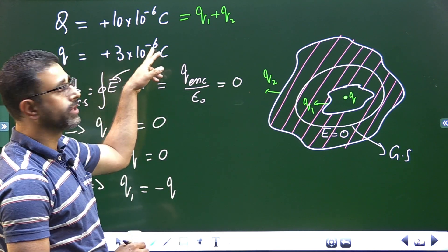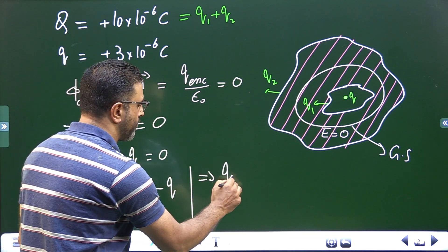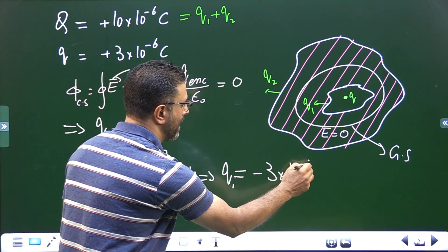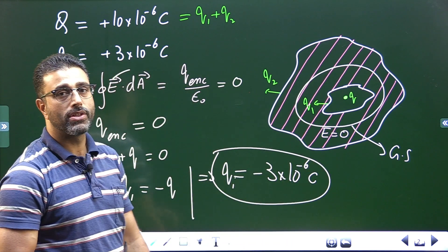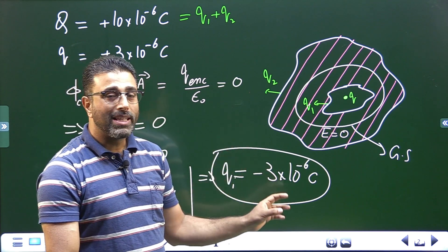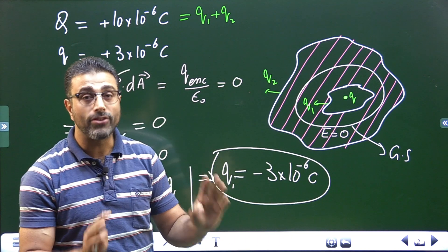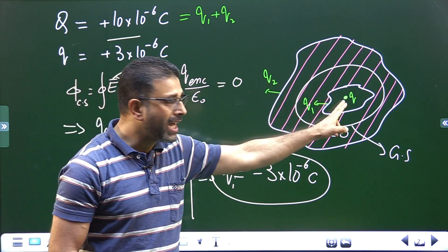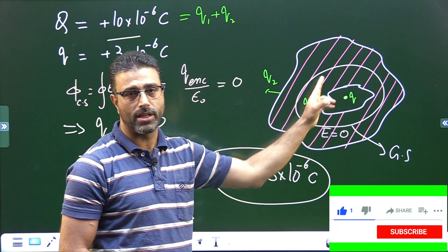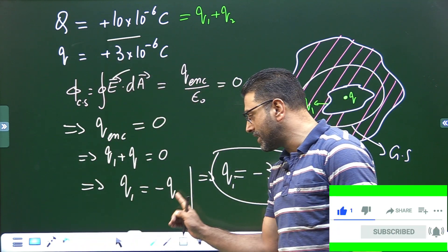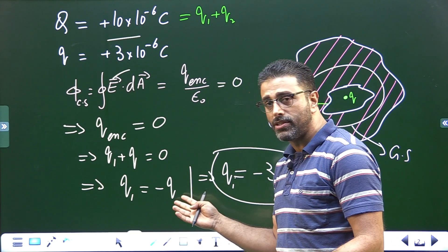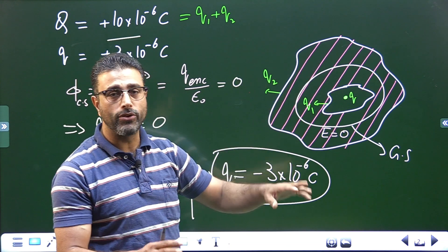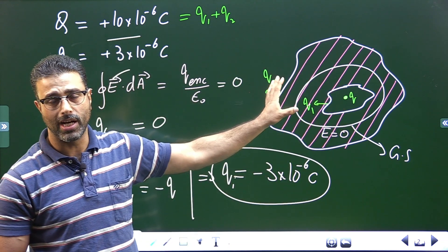Since Q = +3×10⁻⁶ C, the charge on the inner surface Q1 = −3×10⁻⁶ C. Note that the charge on the inner surface has nothing to do with the total charge of the conductor — it equals the negative of the charge contained in the cavity. If there were no charge inside the cavity, there would be no charge on the inner surface.